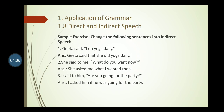In interrogative sentences we change them to assertive form in indirect speech. Sentence three: I said to him, 'Are you going for the party?' This is a verbal question, so 'said to' becomes 'I asked him'. The conjunction used is 'if' or 'whether'. 'You' changes to 'he', and 'are going' changes to 'was going'. Answer: I asked him if he was going for the party.